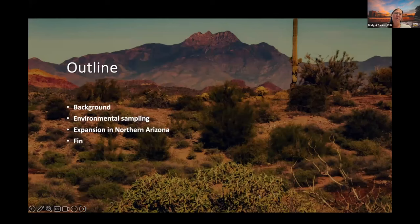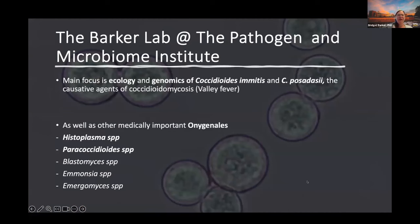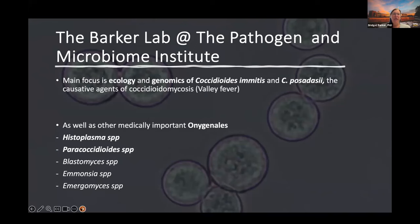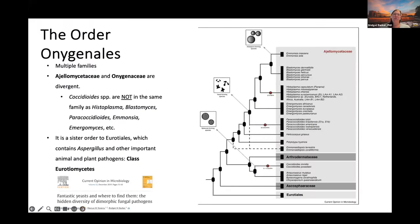I'll give a brief background of the organism and talk about the environmental sampling we've done, and briefly acknowledge the expansion into northern Arizona. In my lab we talk about many different fungi, but my focus is Coccidioides immitis and Coccidioides posadasii. We also work on other Onygenalian fungi including histoplasma, paracoccidioides, blastomyces, emmonsia, emergomyces, and others — mostly from the genomic angle but also with an interest in the environment.